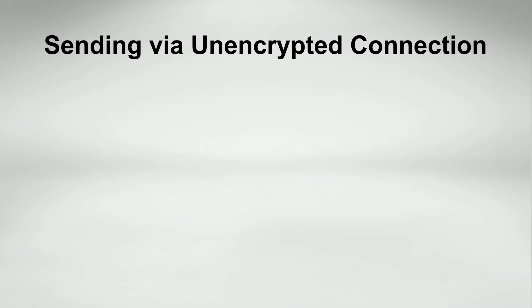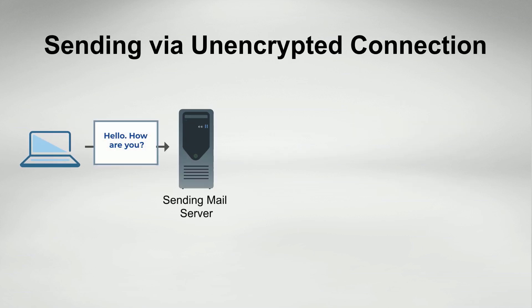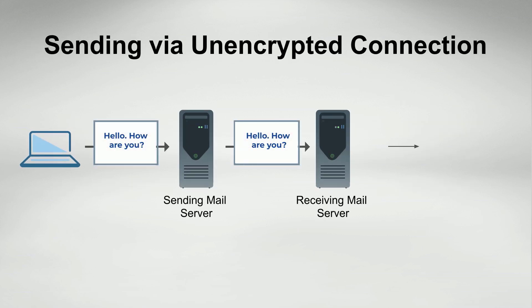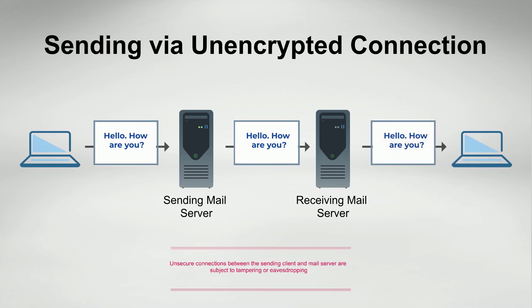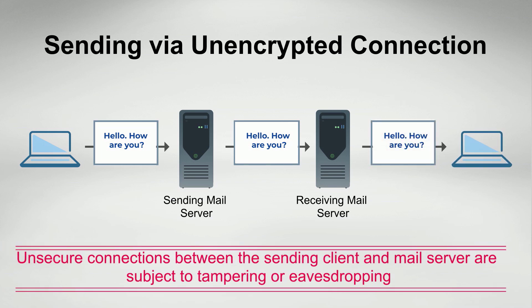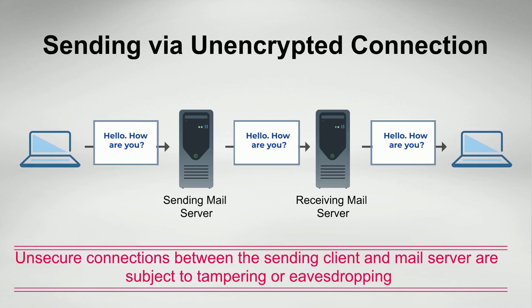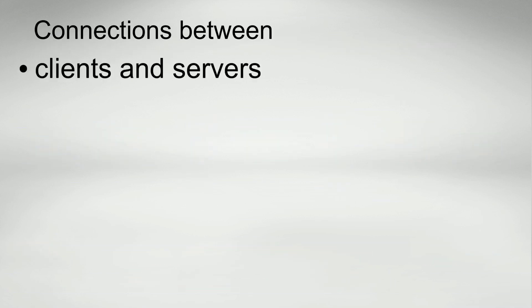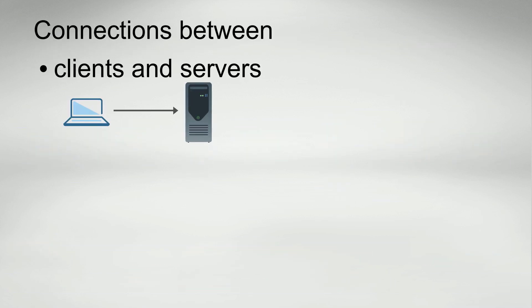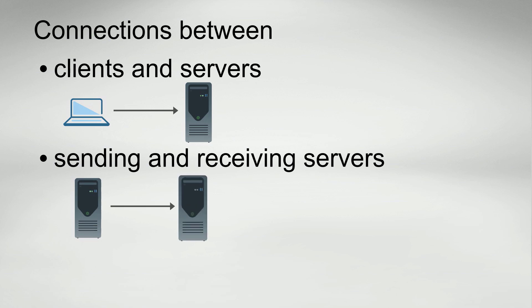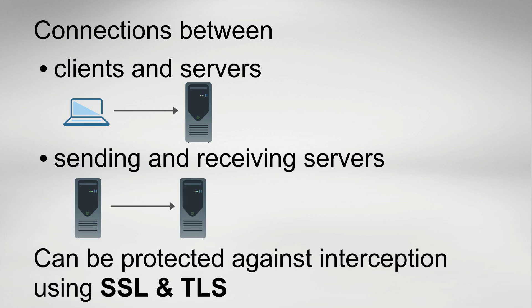When sending an email message, it is first transmitted to the sender's mail server, which then delivers it to the recipient's mail server. Unsecure connections between the sending client and mail server are subject to tampering and eavesdropping. Connections between clients and servers, as well as connections between sending and receiving mail servers, can be protected against interception using SSL and TLS.